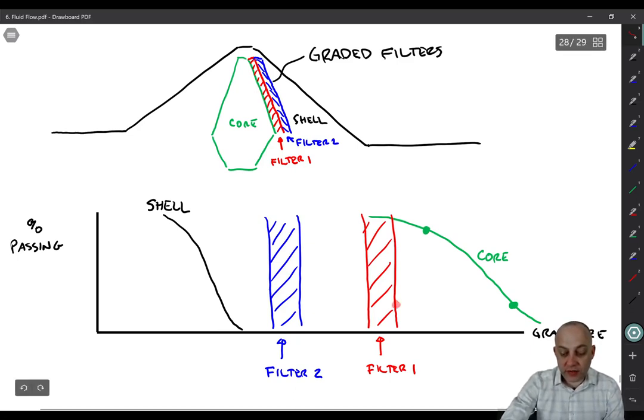Then we can design filter one. You guys should even draw in the two points here. So there's four times D15 and four times D85. And we've designed filter one. And then we look at filter one and we realize, oh, it's too far away from the shell.